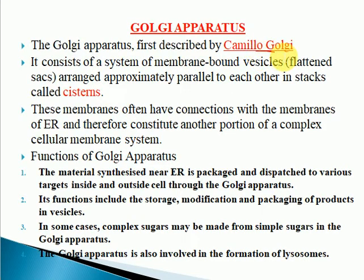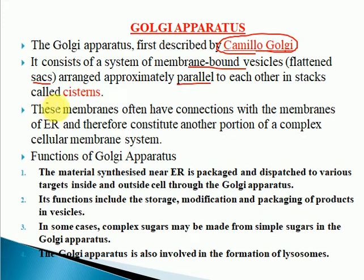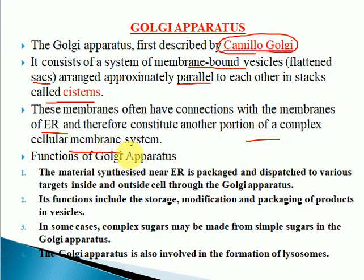The structure was first described by the scientist Camillo Golgi. It is a system of membrane-bound vesicles — small flat bags — that lie parallel to each other and are present in packets or stacks called cisternae. These membranes are connected with the membrane of the ER, and therefore it forms a complex cellular membrane system, or endomembrane system.